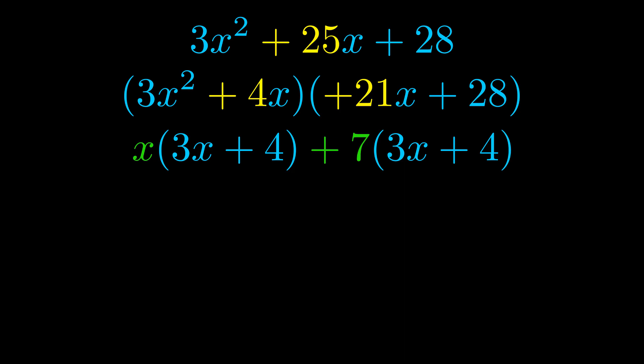Notice also how what remains inside of the parentheses is the same in both cases. The blue values are the same. Those blue values will become one of our factors and we will combine the two green values, the GCFs that we pulled out, to get the other one. And that is our fully factored equation.